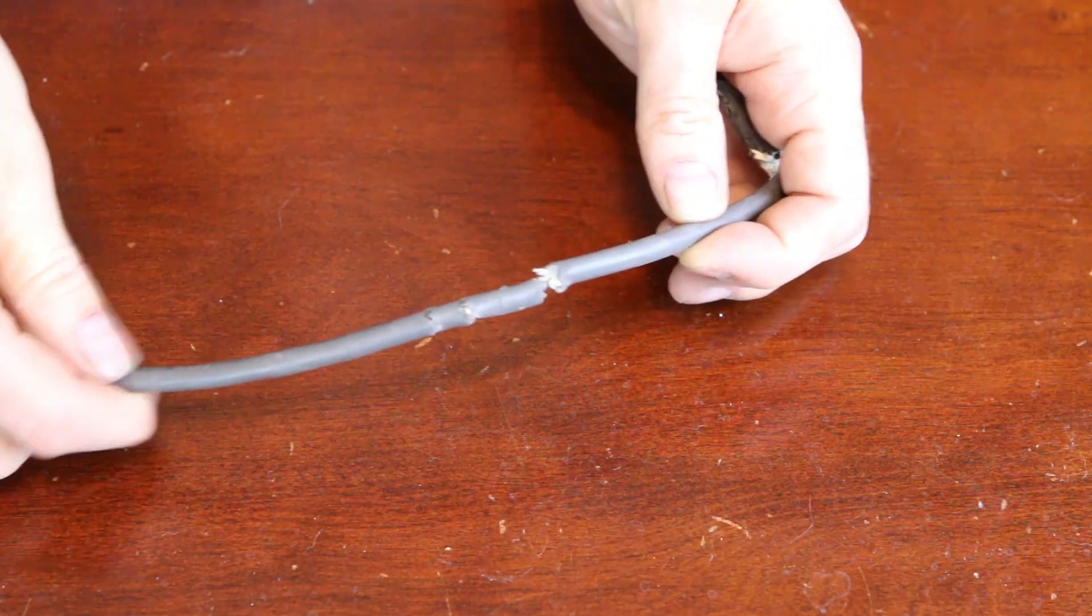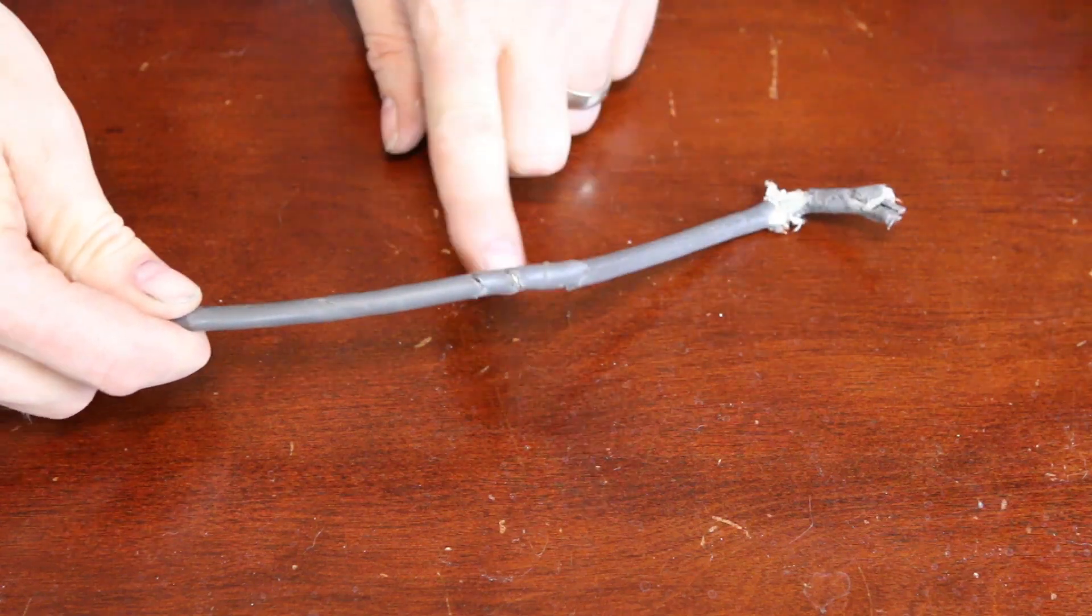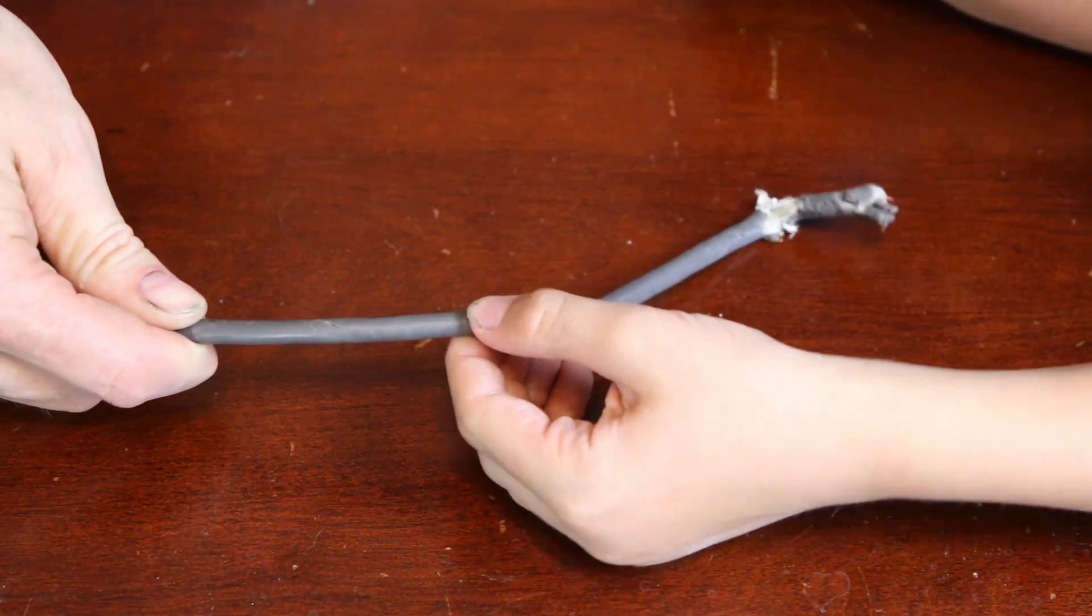The first thing we need to do is find the end where the cord isn't damaged anymore. It looks like it's just right here. You want to cut that off? Yeah.